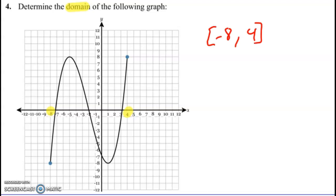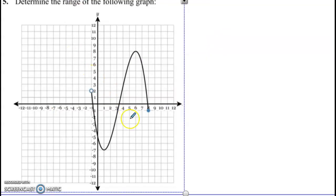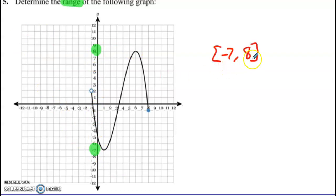One more example - this is another range one. We're going to go as low as we can, negative seven, to as high as we can, positive eight. That's negative seven to eight, both in brackets.